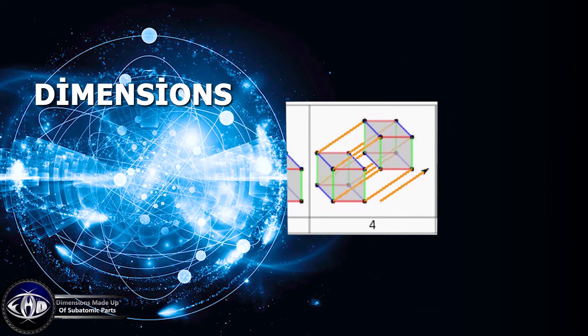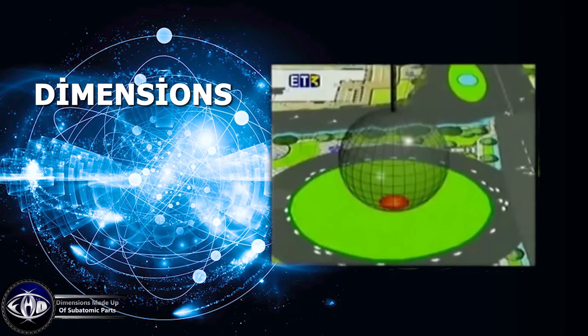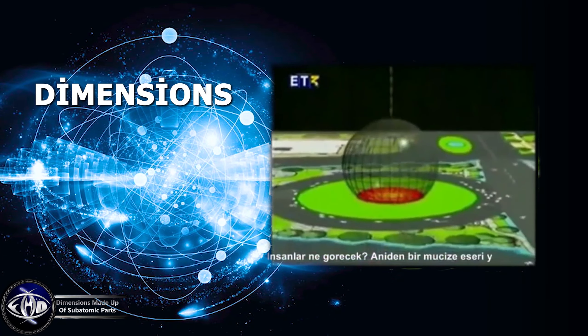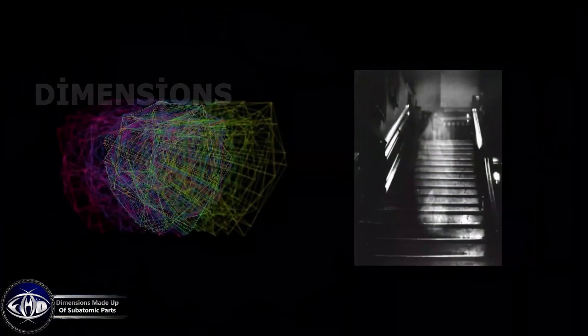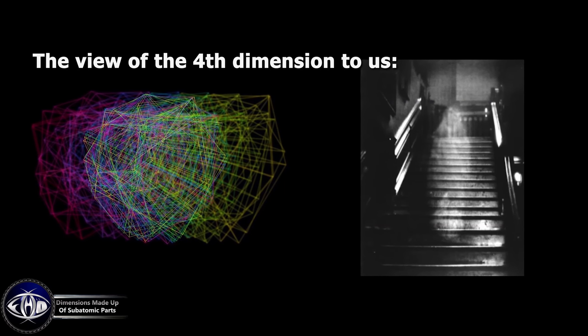Objects in the fourth dimension do not have definitive shapes that we can see and perceive. This is the reflection of a 3D object in the second dimension. Similarly, this is how we can see the reflection of a fourth dimensional object in the third dimension.